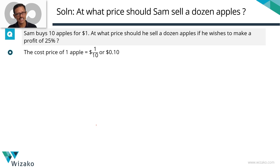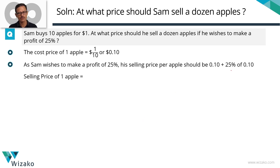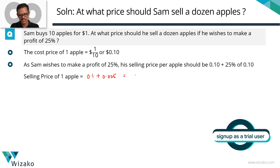It's not the price for one apple. The cost price of 10 apples equals $1, so the cost price of one apple equals $0.10. He wishes to make a 25% profit — 25% of the cost price. So the selling price equals the cost price plus 25% of the cost price: 0.10 plus 25% of 0.10, which is 0.025. That gives a selling price of $0.125 for one apple.